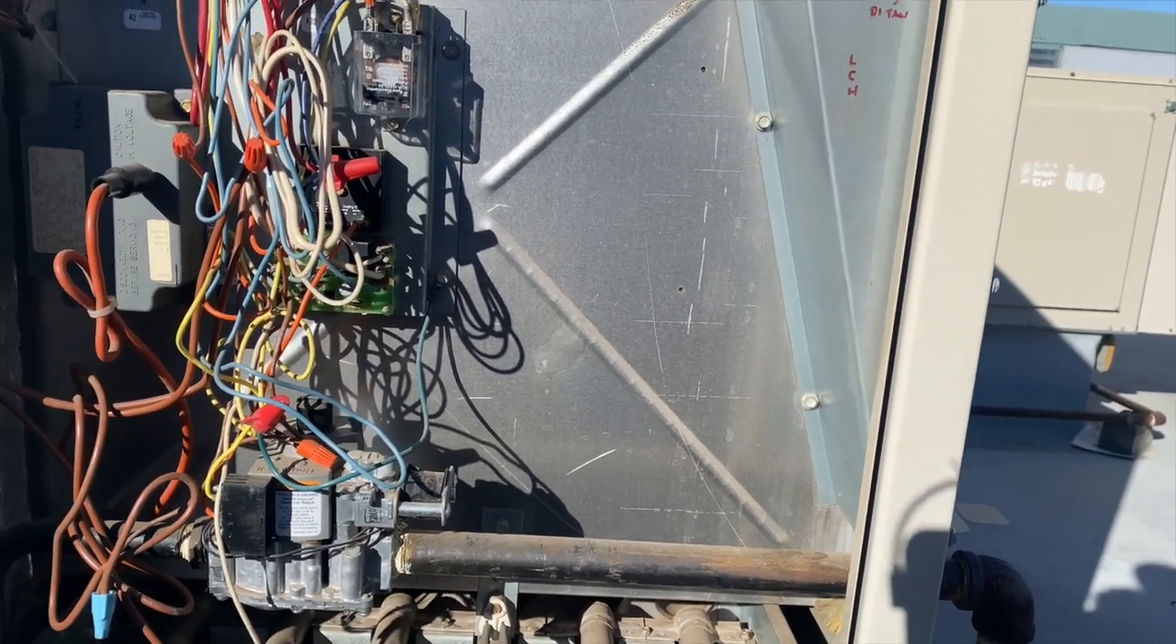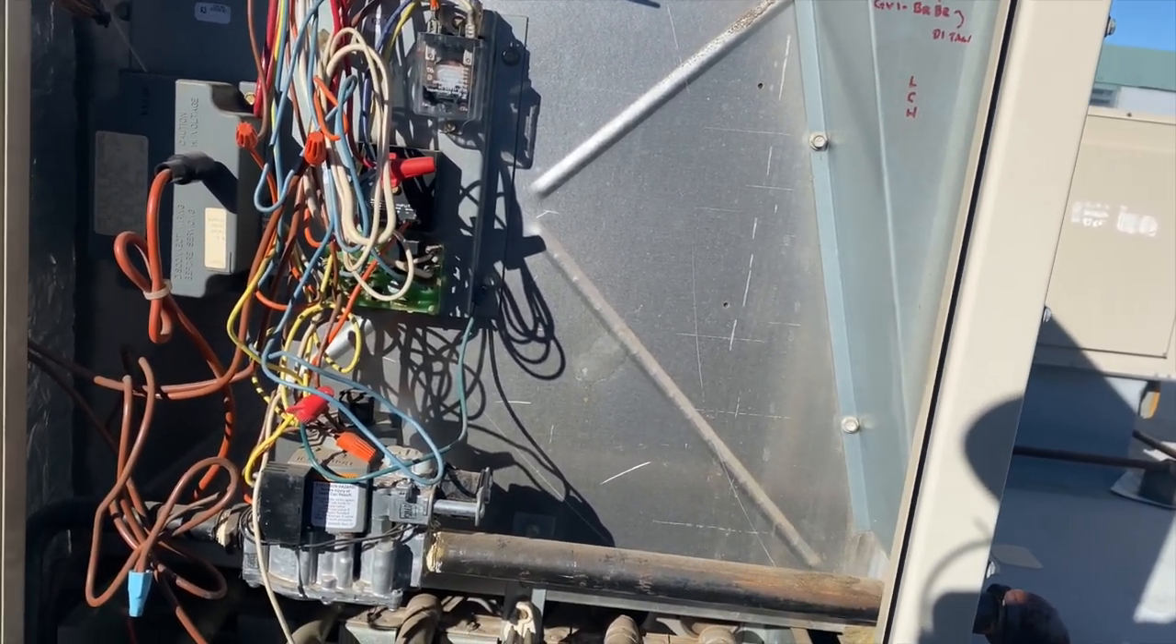I don't see a pressure switch on this so it might have a centrifugal switch. Basically when you spin something, when it spins fast enough it closes a switch, that's called a centrifugal switch. If that's not working or it's stuck, then it thinks that the inducer is not functioning so it won't even try to call for the igniter. We could also have a bad ignition module, so we'll see what's going on.